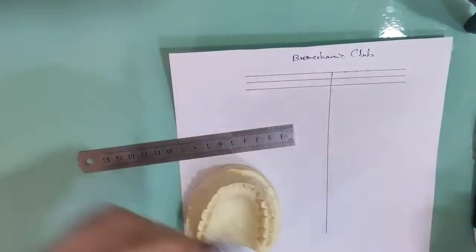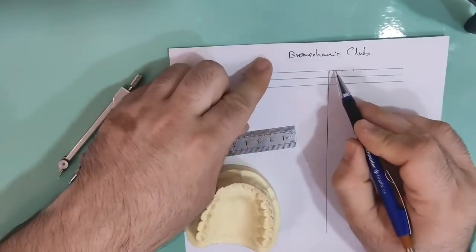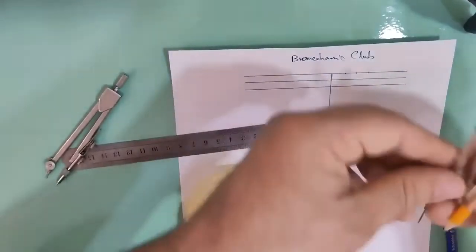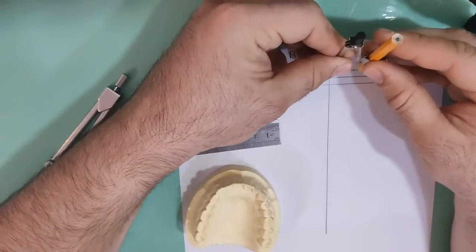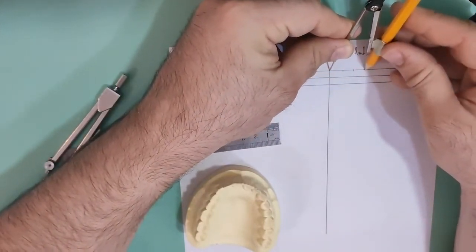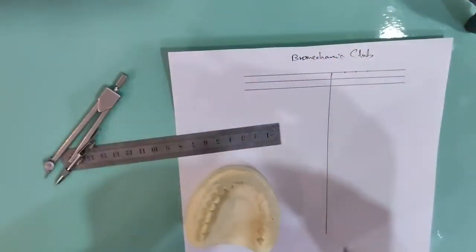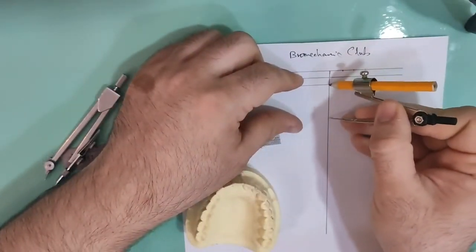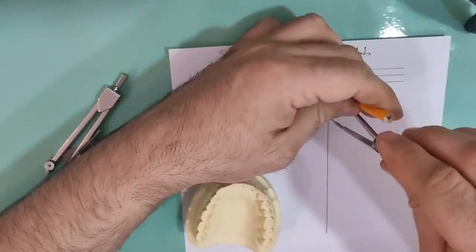So we have here three points: meso-distal width of central, lateral, and canine. We use this one with pencil and determine the radius by adding the three widths. We put the pencil and the other side on this line and draw a circle.